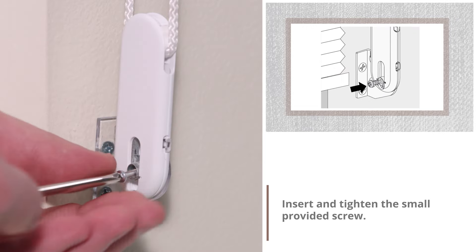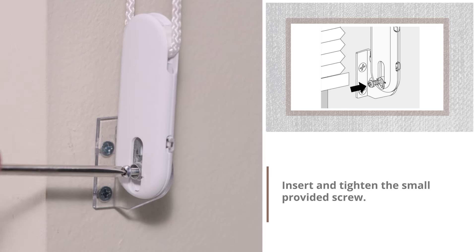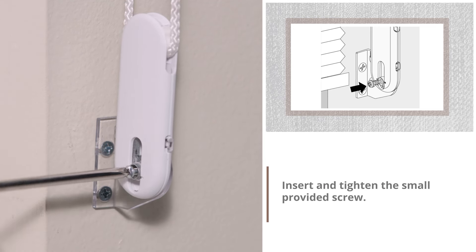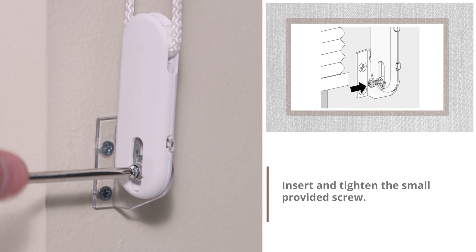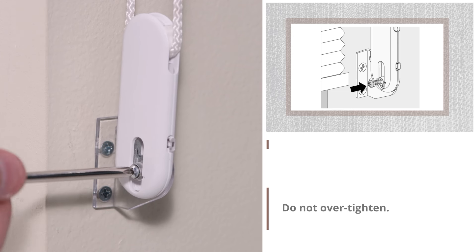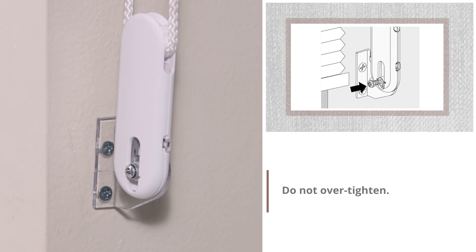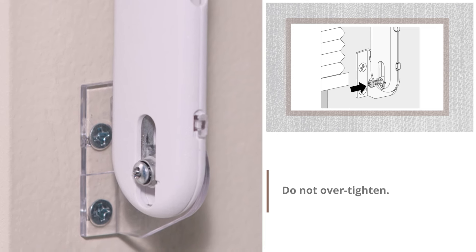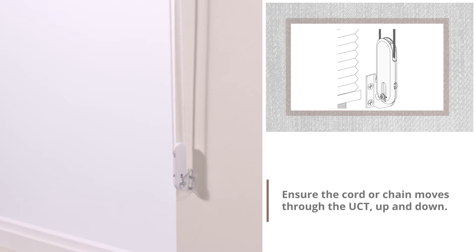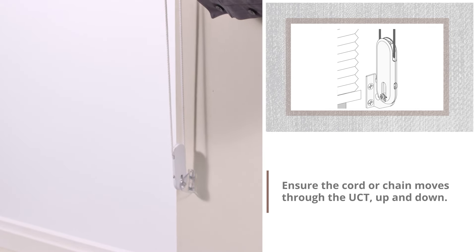Insert and tighten the small provided screw. Do not over tighten. Ensure the cord or chain moves through the UCT up and down.